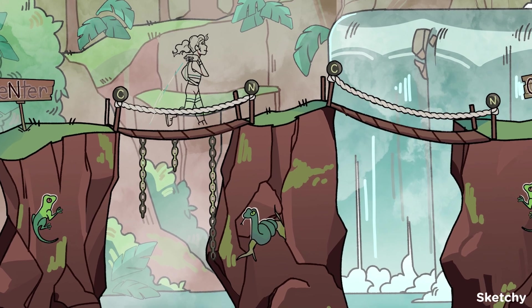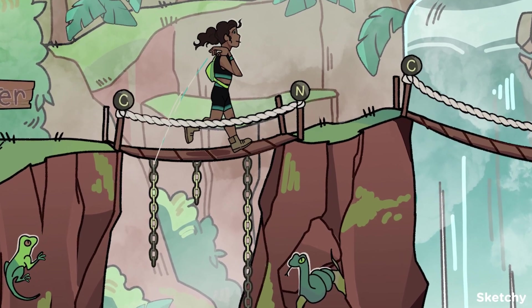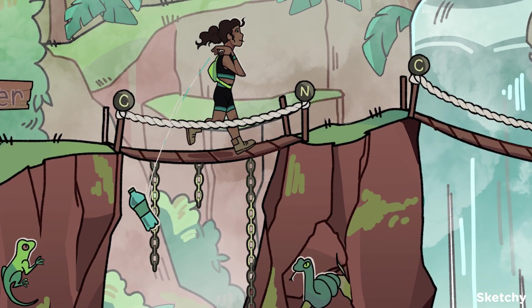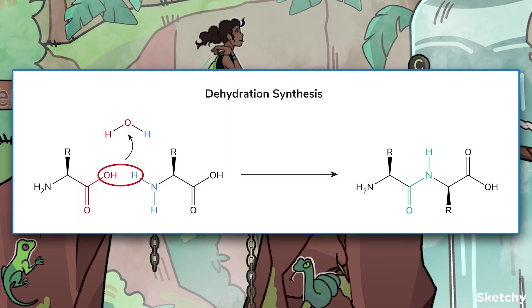A peptide bond is formed when two amino acids bind in a process called dehydration synthesis, symbolized by this hiker throwing her water bottle off the side of the bridge. Dehydration synthesis is a nucleophilic substitution reaction between the amino group of one amino acid and the carboxyl group of the other, with water as a leaving group. That's why it's called a dehydration reaction.